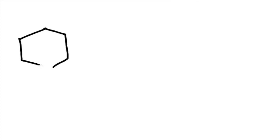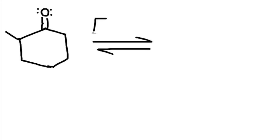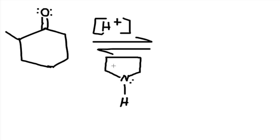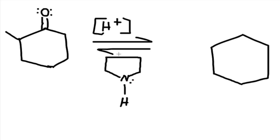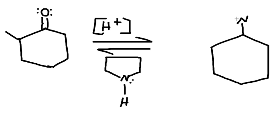Let's do another example. We have this ring structure with a methyl on the left and a ketone. Again, we're in acidic conditions and we add this secondary amine, which is a cyclopentyl in this case. Redraw the structure: where the oxygen is, put a single bond, then nitrogen, and add the structure with a lone pair and the methyl group. We add the double bond to the left because there is more carbon on that side — we add it to the more substituted side.